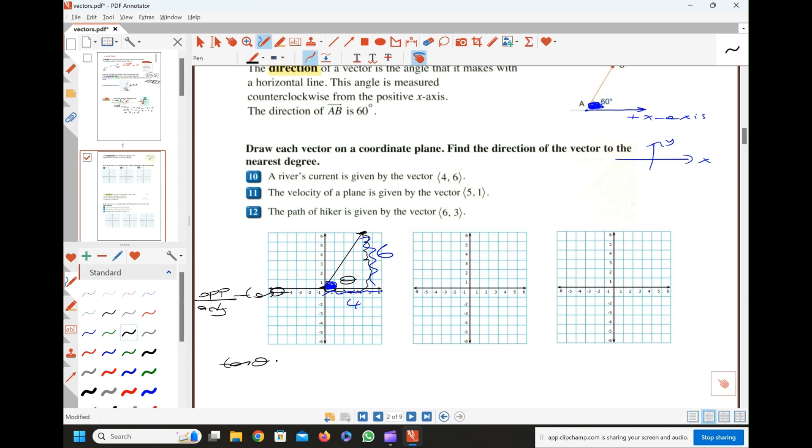So tangent theta is equal to opposite, which is 6, adjacent, which is 4. So I know the ratio, I know the ratio of the opposite and adjacent. I don't know the angle. So how do I find that angle? So remember what you learn in grade 10 about trigonometry. In order to isolate that angle, what should I do? I am not dividing both sides by tan. There is a way of solving this. In order to isolate that angle, in order to get that angle by itself, all we have to use is inverse tangent. So angle is equal to tangent inverse of that ratio, 6 over 4.